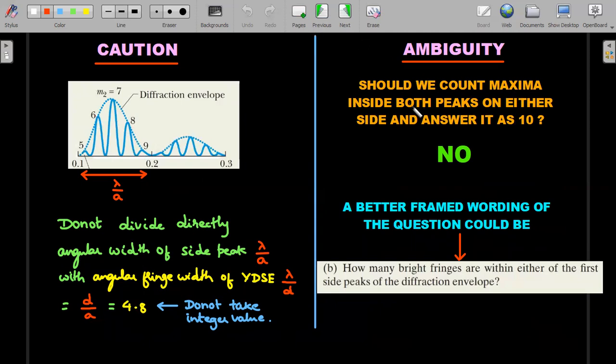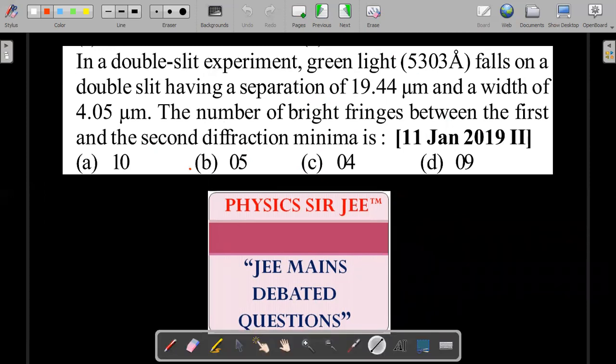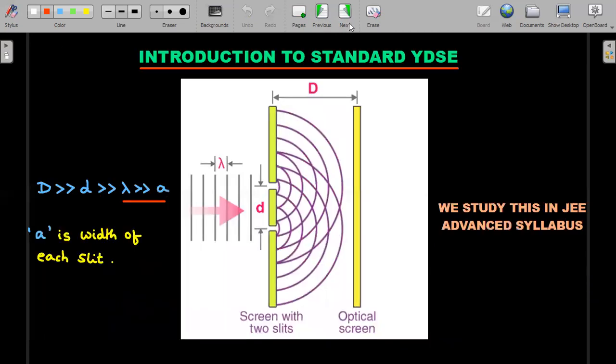Now should we count the maxima inside both peaks on either side and answer it as 10? Answer is no. If you see that there is a small ambiguity in the question, but if you decipher it, he said number of bright fringes between the first and the second diffraction minima. That means he's only talking about one side. Yeah, I can understand some students argue that there is, but the use of 'the' and not 'a' is the way—yeah, we are going to look at and answer it as fine. That's what the JEE final key was, but they could have managed a better language. So Resnick and Halliday does that better in his textbook, and I'll show you that language.